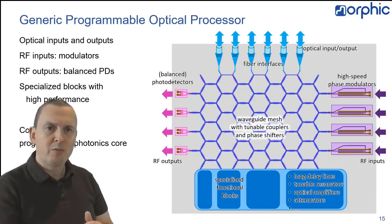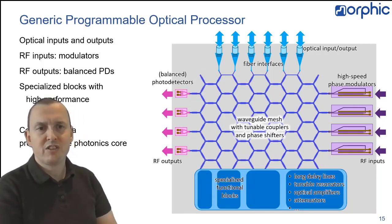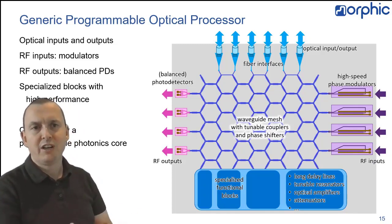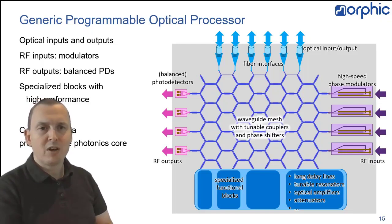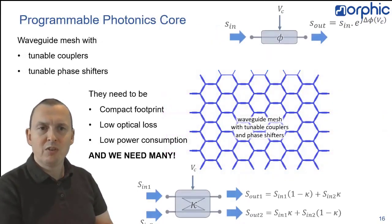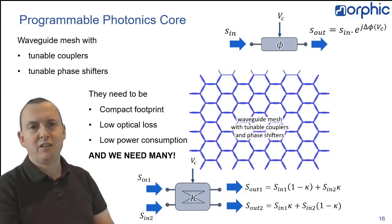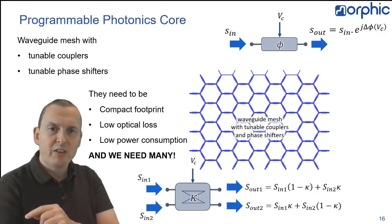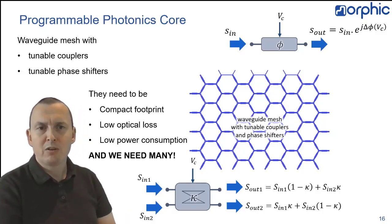In practice, it could look a bit like this. A waveguide mesh, which consists of tunable couplers and phase shifters, essentially allowing you to program the scatter matrix between all the power ports in this circuit. Now, the nice thing about such a waveguide mesh is that you only need two types of components to make it. You need an electro-optic phase shifter, and you need a tunable coupler. The catch is here that you need hundreds or thousands of them. So they need to be really good. They need to be compact. They need to have low optical loss and low power consumption.